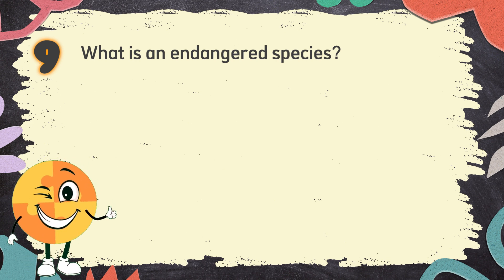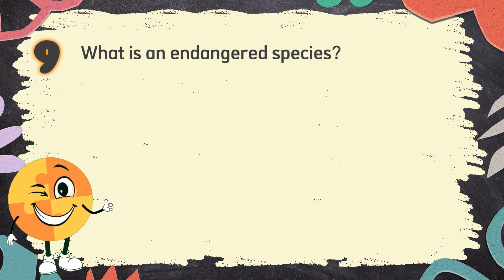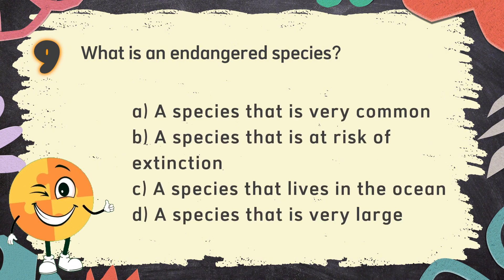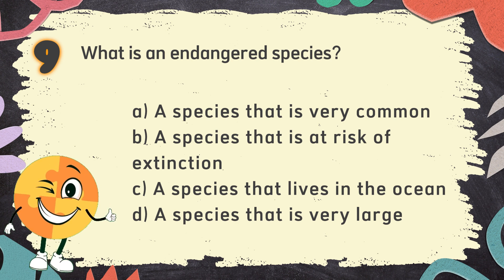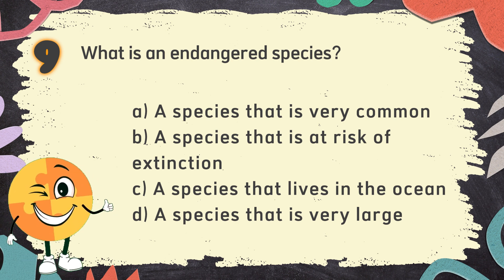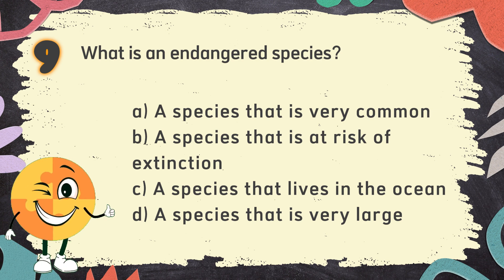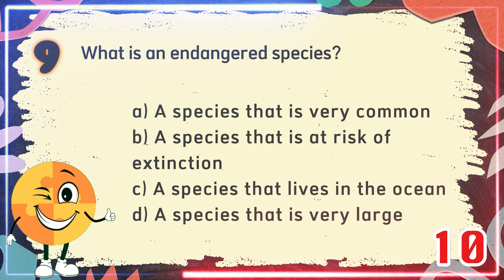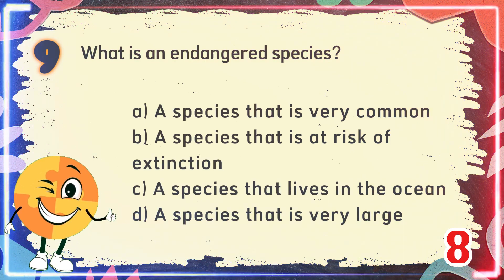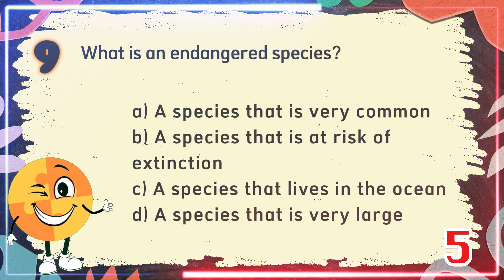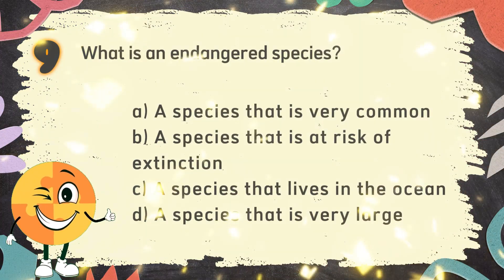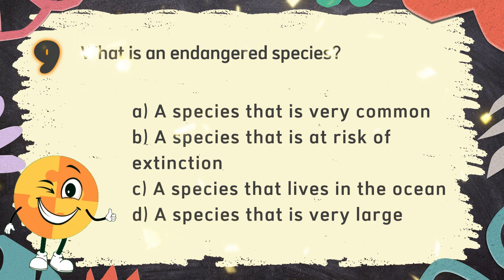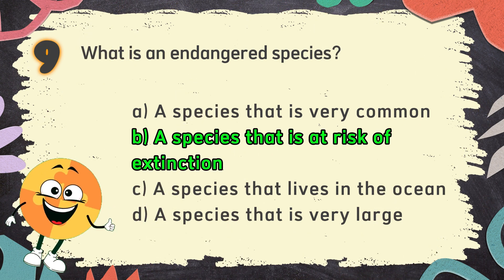Number 9. What is an endangered species? The choices are A. A species that is very common, B. A species that is at risk of extinction, C. A species that lives in the ocean, D. A species that is very large. The correct answer is B. A species that is at risk of extinction.